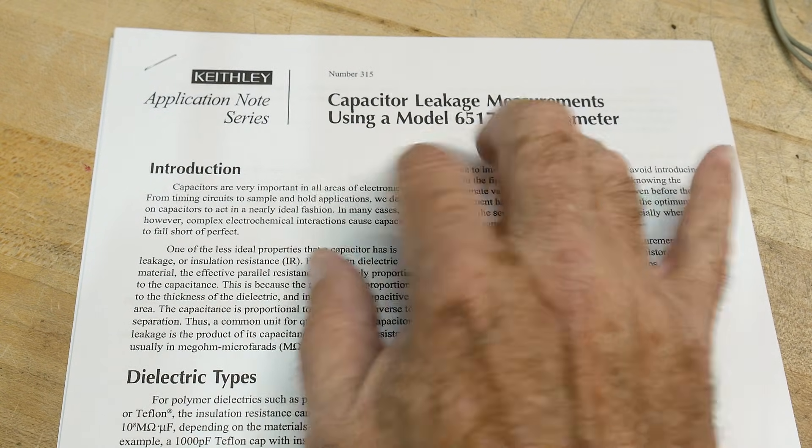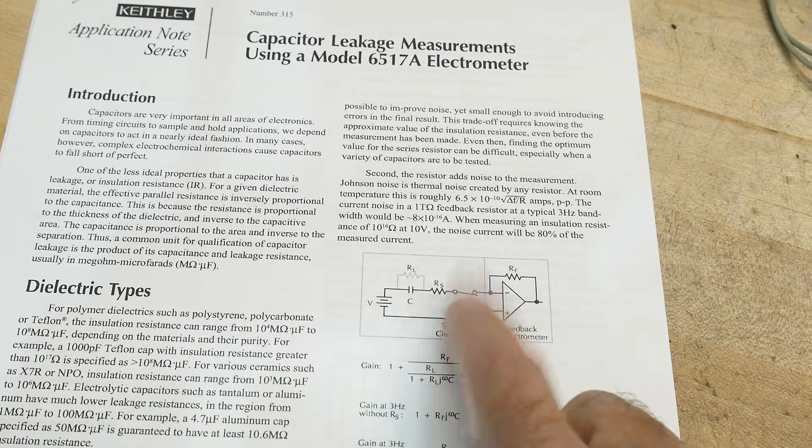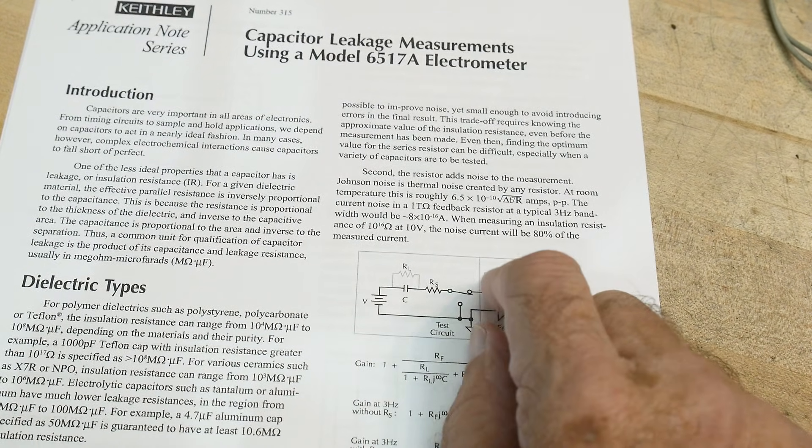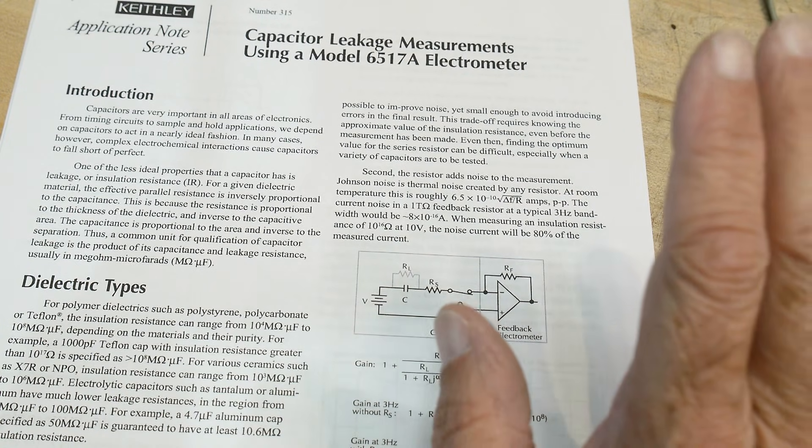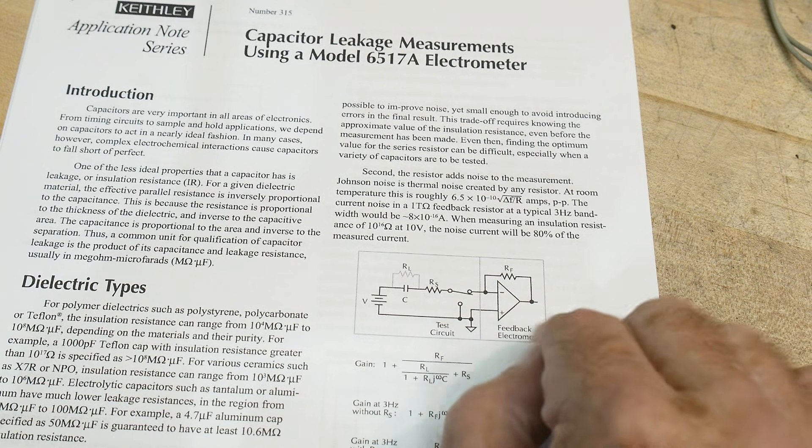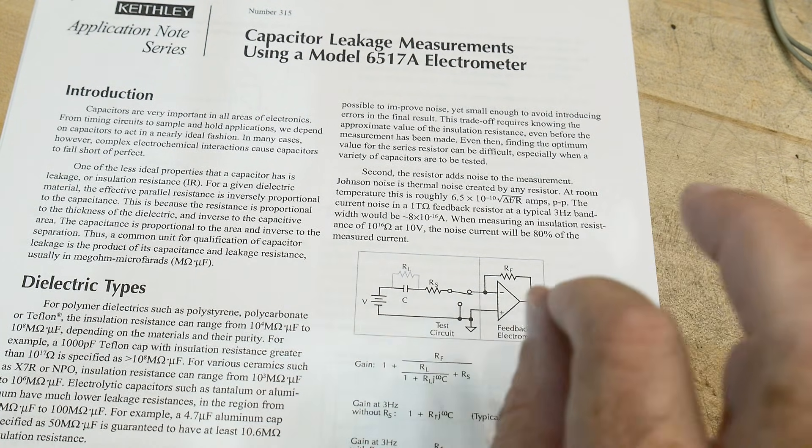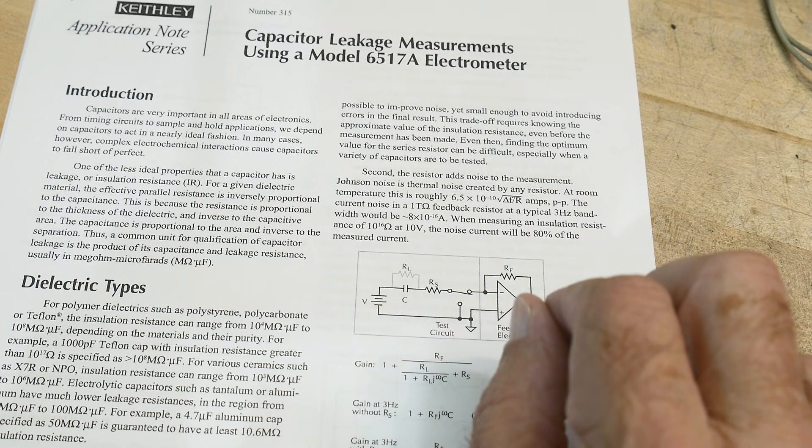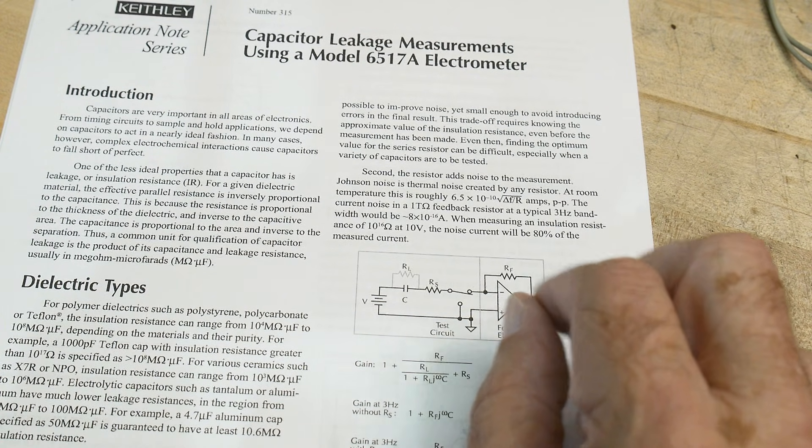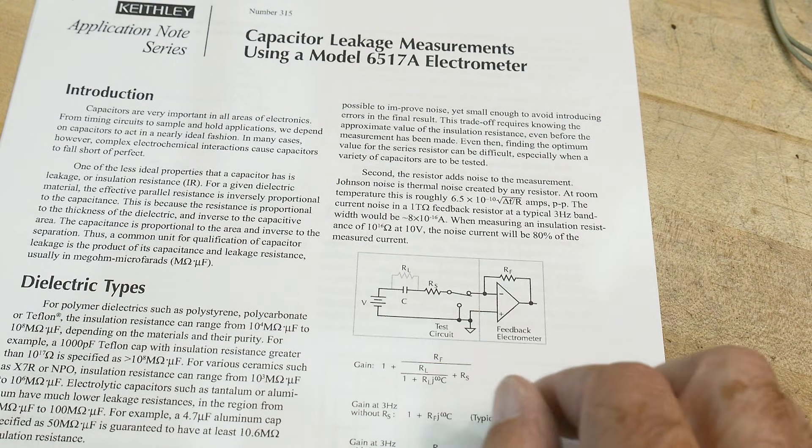So Keithley has an application note on how you measure capacitive leakage. You use an electrometer, which has many teraohms of input resistance. So you don't load anything down. It can measure very small amounts of leakage, up to 10 to the 16th ohm. These are just crazy devices.